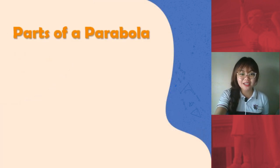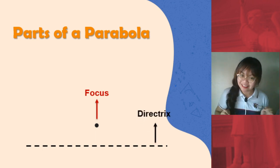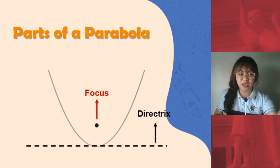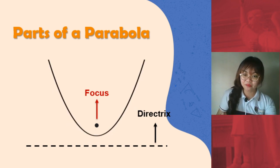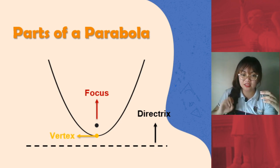Now, these are the parts of a parabola. We started with the fixed point called the focus. And then we have a fixed line. This fixed line is called directrix. Then from these two, we were able to construct the parabola. The lowest point in our parabola, this one, is called the vertex. This is also the midpoint between the focus and the directrix.